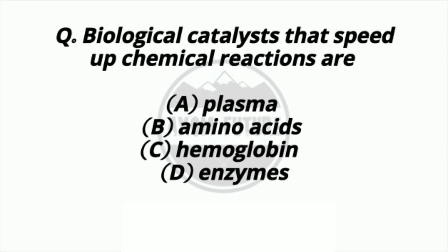Question 7. Biological catalysts that speed up chemical reactions are? Option A: Plasma. Option B: Amino acids. Option C: Hemoglobin. Option D: Enzymes. Answer: Option D — Enzymes.